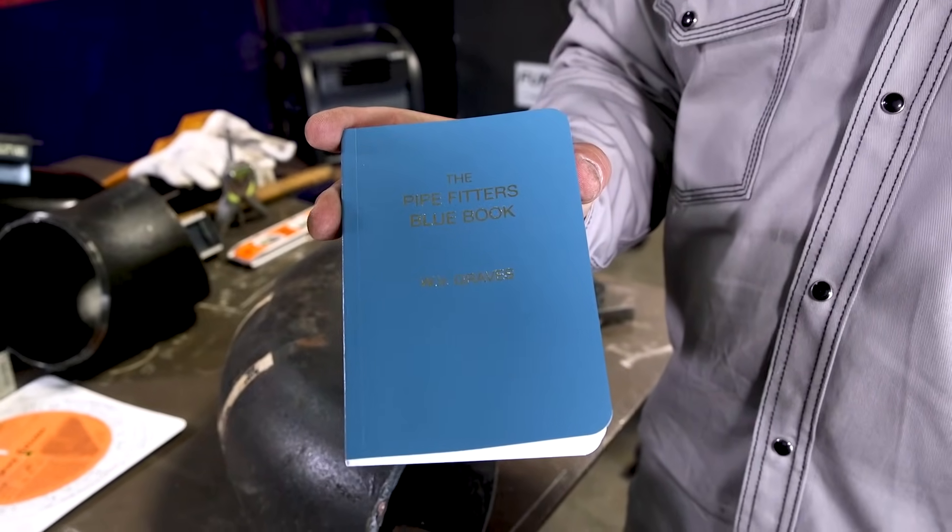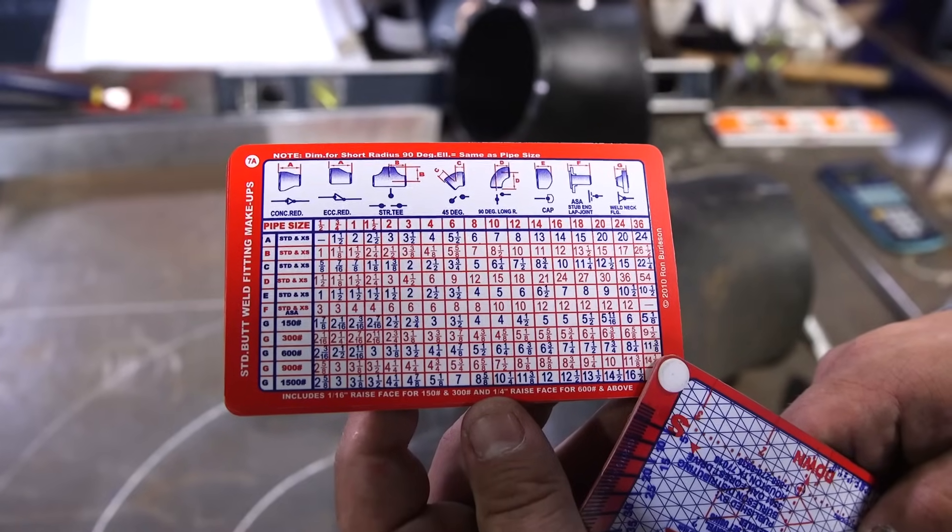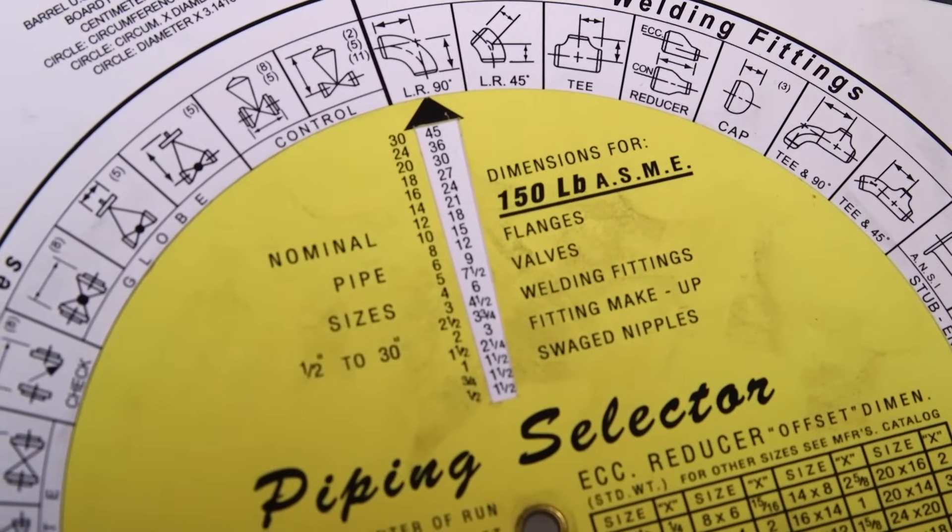Well, we have several options. We have our pipe fitter blue book, we have these Chico cards and we have this piping selector. You can find that information on all of these.